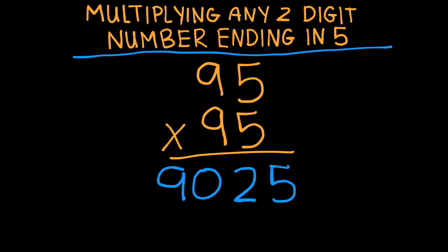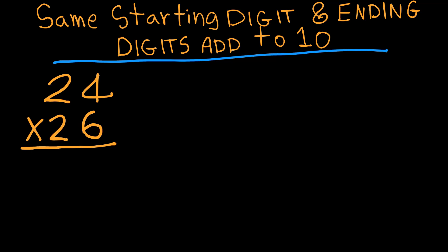This trick is also one of my favorite tricks because it also applies to this kind of problem: same starting digit (2 and 2), and ending digits that add up to 10 (4 and 6 add up to 10). Whenever we have this situation happening, it's similar to the previous trick. What we need to do is 2 times 3 is 6, and then we will multiply 4 times 6. So 2 times 3 is 6, 6 times 4 is 24. Our final answer is 624.